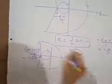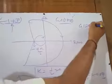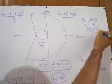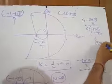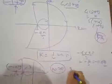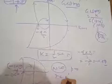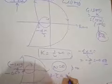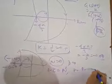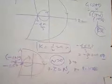Since G(s)H(s) = K / [s(1+2s)(1+4s)] has no poles on the right-hand side, P = 0. Applying the Nyquist criterion: Z = P - N = 0 - 0 = 0. Therefore, the system is stable for K = 0.5.